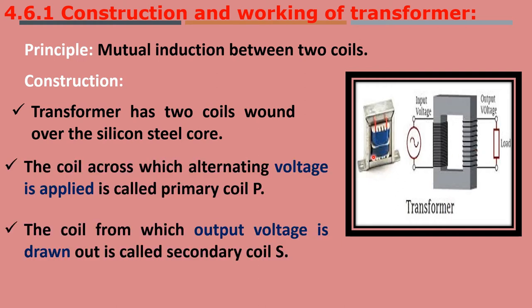The coil to which the alternating voltage is applied is called the primary coil, denoted by P. The coil from which the output voltage is drawn is called the secondary coil.